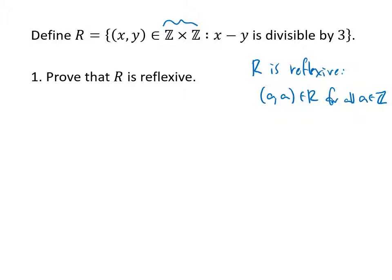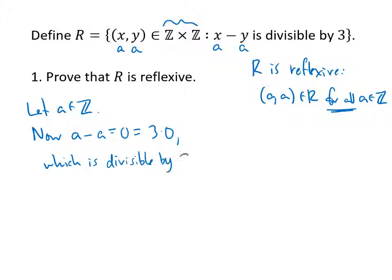So the way we're going to prove this, the way we prove a for all statement, is we let a be an element of Z. And then we've got to think about why is (a,a) in our relation R. Well, if x is a and y is a, then that's a minus a. And a minus a, that's 0, which is 3 times 0, and that's divisible by 3. So that means that (a,a) is in my relation as desired. That's it.